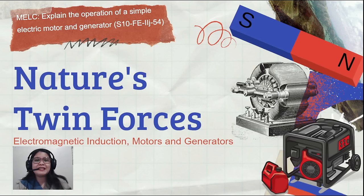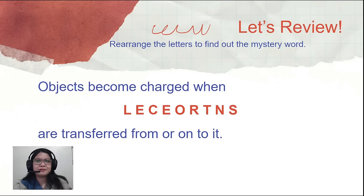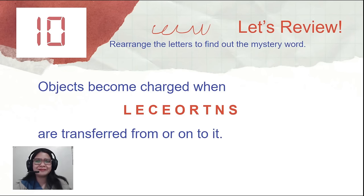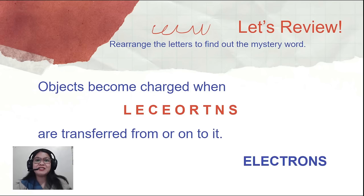Before we start, let's have a short review of very important concepts that you have discussed in previous years about electricity. I want you to rearrange the letters to find out the mystery word. For our first sentence: objects become charged when blank are transferred from or onto it. If you answered electrons, then you are correct.